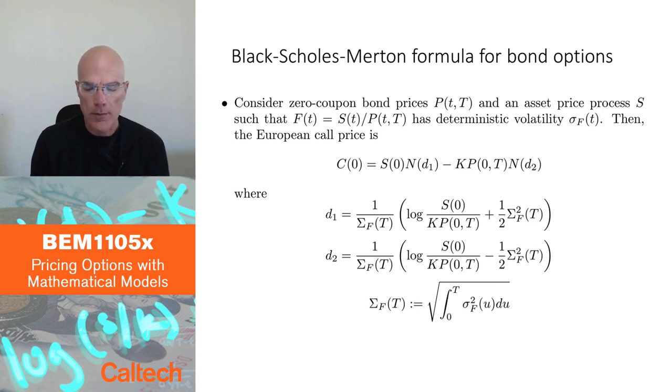It's called the Black-Scholes-Merton formula for bond options. I'm going to look at two assets here. One I'm going to use as the numeraire and the other asset I'm going to write the call option on. They will both be bonds eventually, but right now let's start with any asset S on which I'm going to write the call option. S is going to be the underlying of my call option.